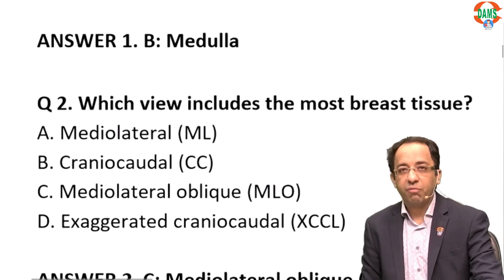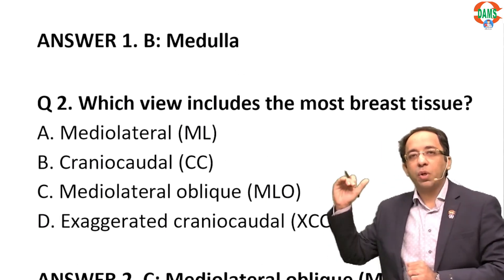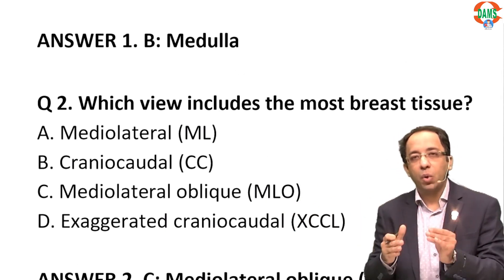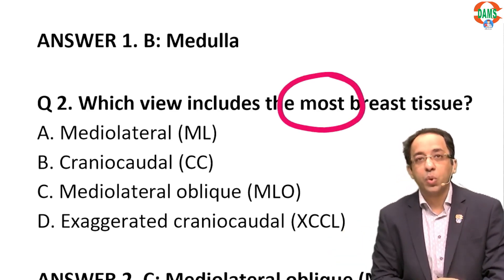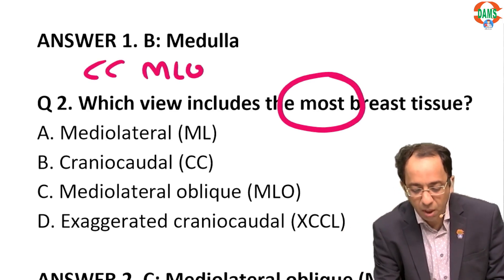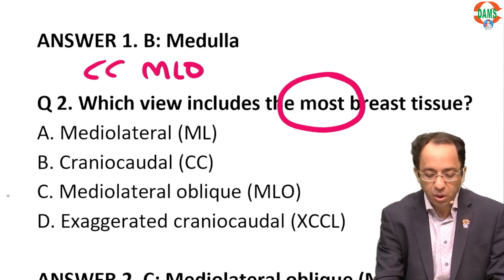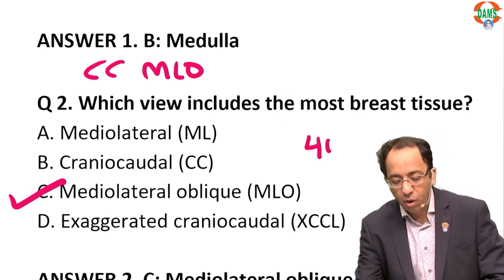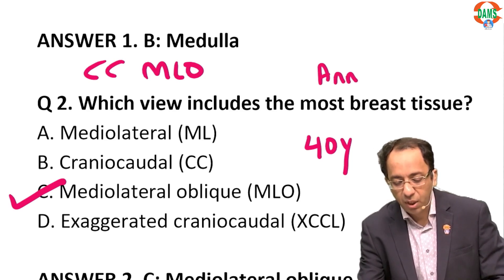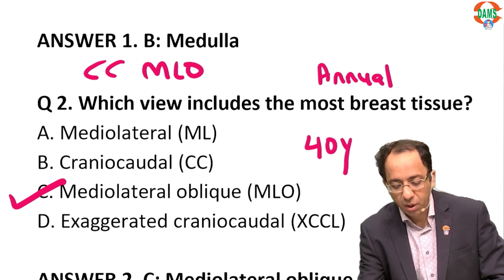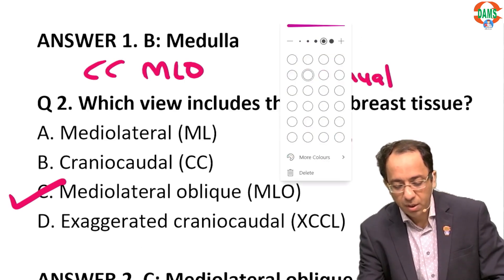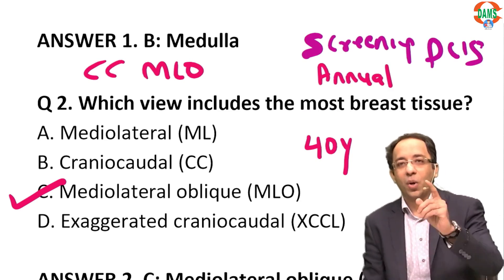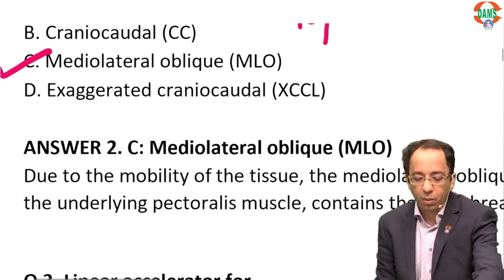Next, a very important question on mammography. In mammography, the X-ray views done are craniocaudal (CC) and mediolateral oblique (MLO). The question asks which view contains the most breast tissue — the answer is the mediolateral oblique view. Also remember, mammography is done annually in all females over 40 years for screening. A potential exam question: ductal carcinoma in situ shows microcalcification on mammogram.